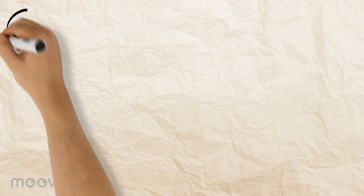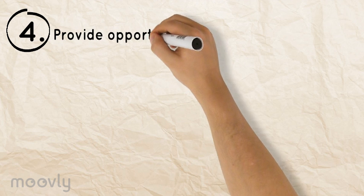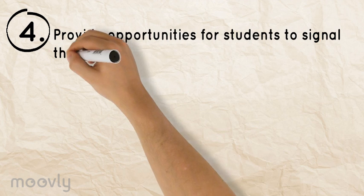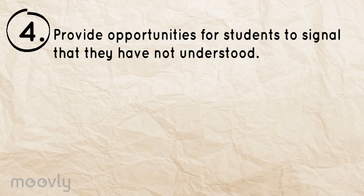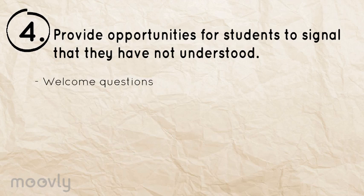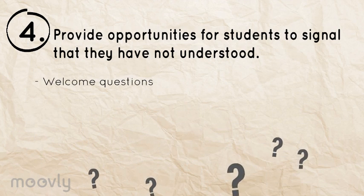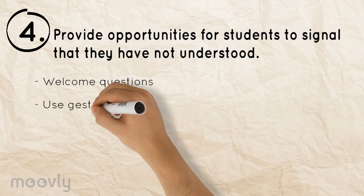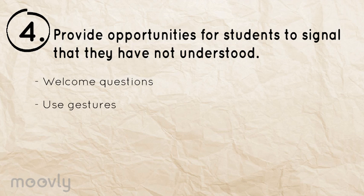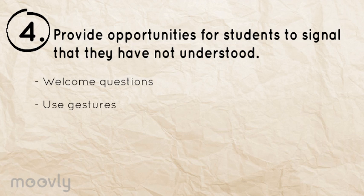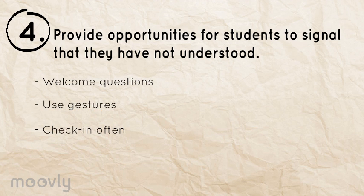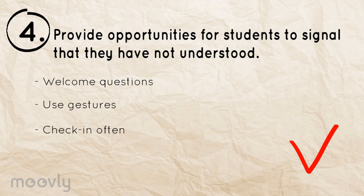You can also give your students opportunities to signal that they have not understood something. Nurture an environment in which students feel comfortable asking questions for clarification. It may be useful to develop a gesture to use with your students for them to indicate non-verbally that they didn't understand something and need it to be repeated. Keep checking in with your students throughout to monitor their learning during the unit and ensure they're progressing as expected.